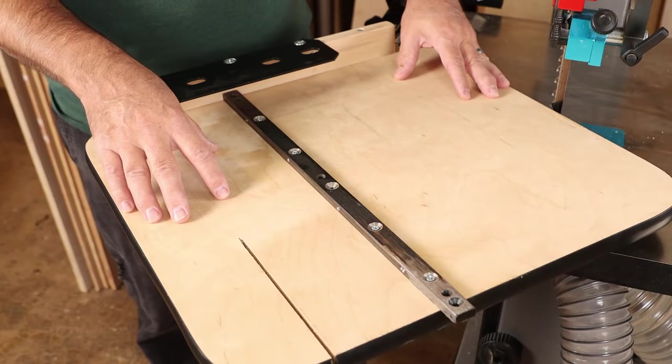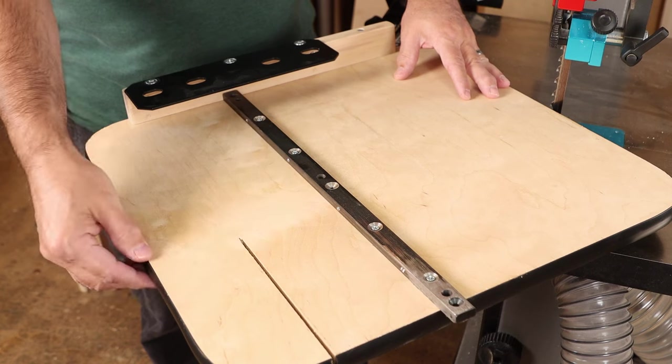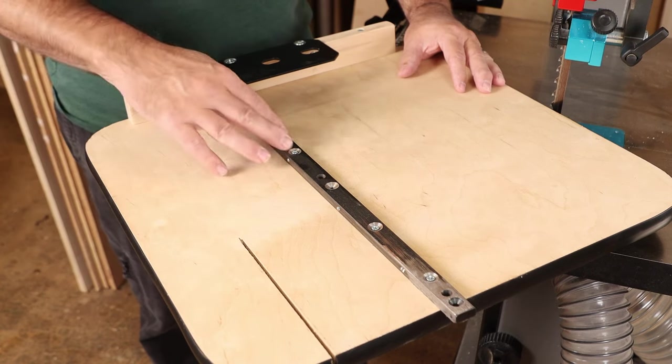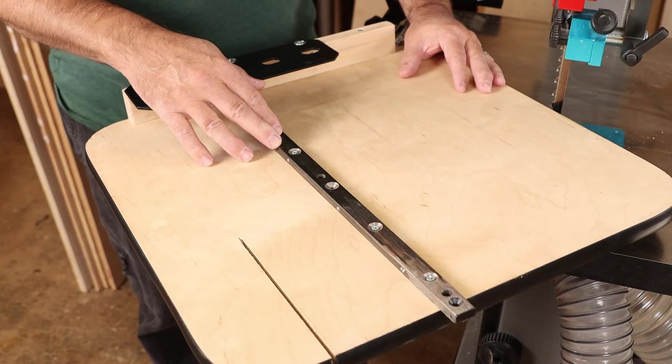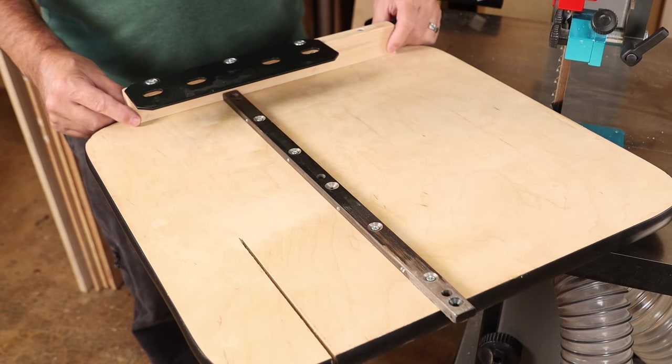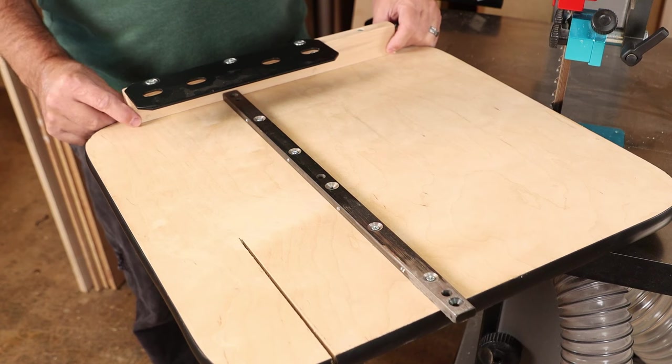The base of the jig is just three-quarter-inch ply, and it's been edge-banded with some T-molding. It's got a metal runner. This is standard three-quarter by three-eighths miter bar. And then you'll need to add a hardwood fence at the back of the jig.